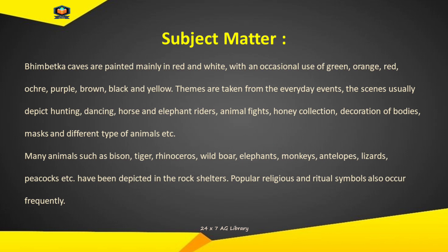Subject Matter: Bhimbetka caves are painted mainly in red and white, with occasional use of green, orange, ochre, purple, brown, black and yellow. Themes are taken from everyday events; the scenes usually depict hunting, dancing, horse and elephant riders, animal fights, honey collection, decoration of bodies, masks, and different types of animals. Many animals such as bison, tiger, rhinoceros, wild boar, elephants, monkeys, antelopes, lizards, peacocks, etc. have been depicted in the rock shelters. Popular religious and ritual symbols also occur frequently.